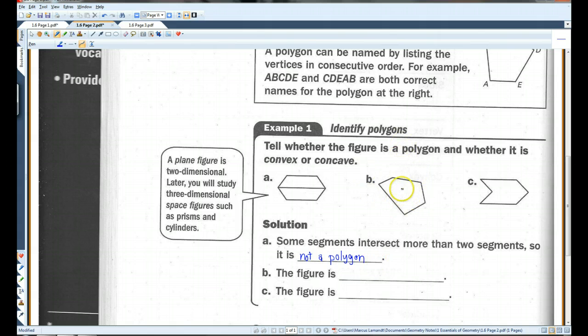This figure, it is a polygon, and it is convex because all the vertices face out. They point outward.